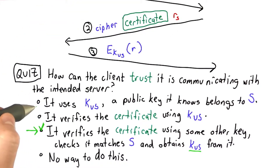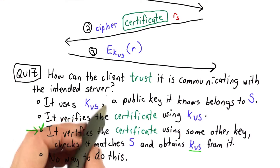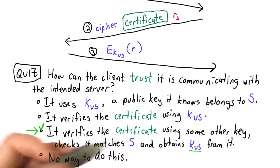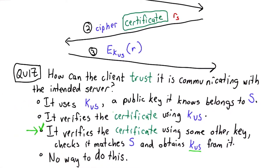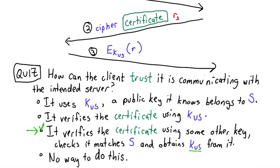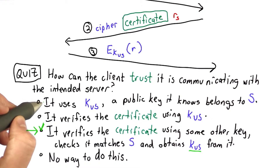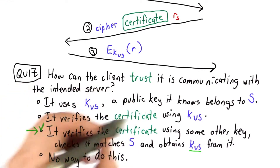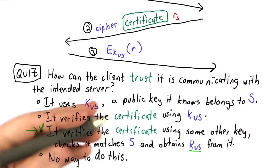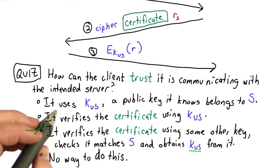Number one would work if we had a way to always know the public key beforehand — that would be great, and we wouldn't need any other solution. But this is not going to work for websites. This would only work if we could preload the public key of all the websites we might ever communicate with into the browser, which is not realistic. We'd need some other way of getting new public keys for new sites as we visit them.